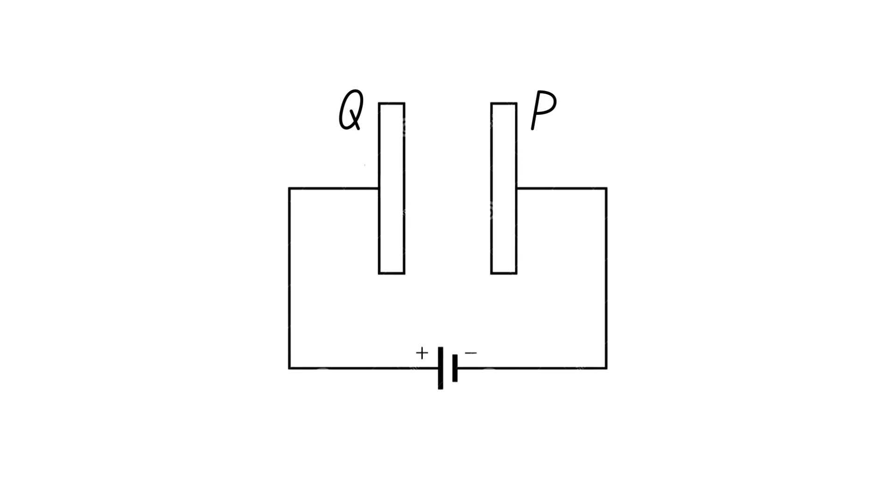Here is how capacitors work. When a capacitor is connected to a power source, the power source drives a current through the circuit by pushing electrons from the negative terminal of the battery. When these electrons reach plate P, they cannot cross the gap between the plates so they accumulate on P. This generates an electric field which repels electrons from plate Q, causing them to flow back to the battery via the positive terminal.